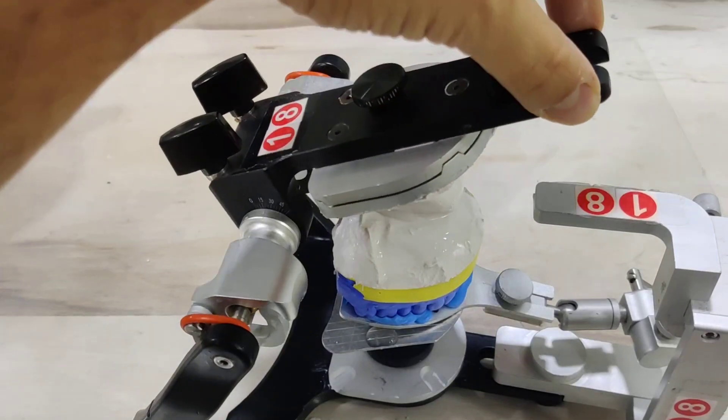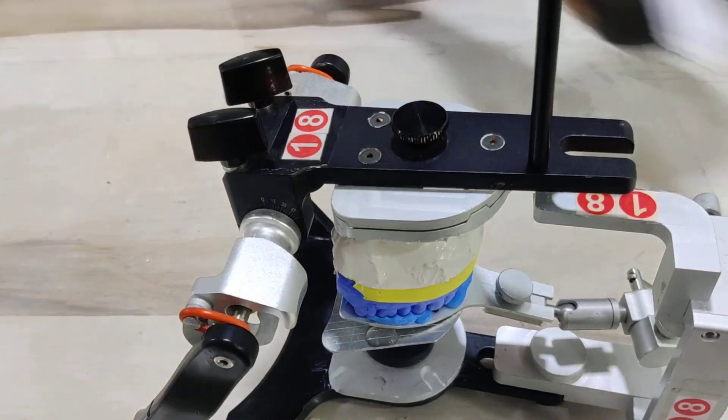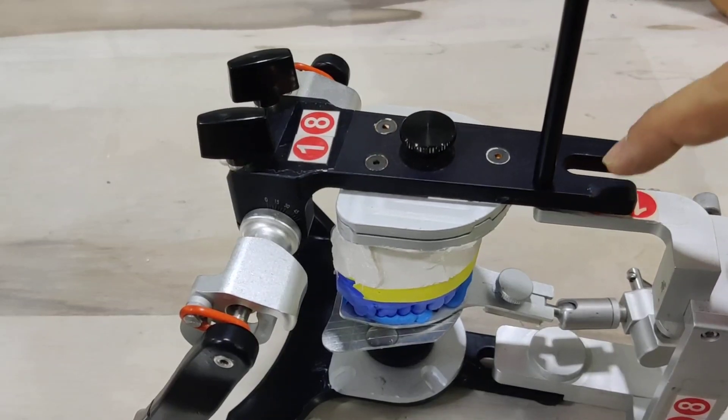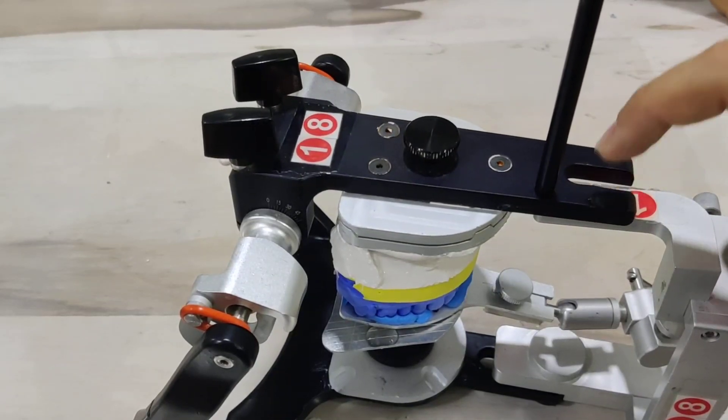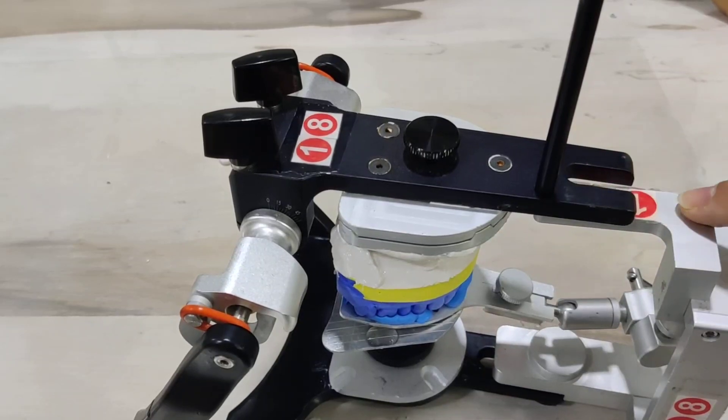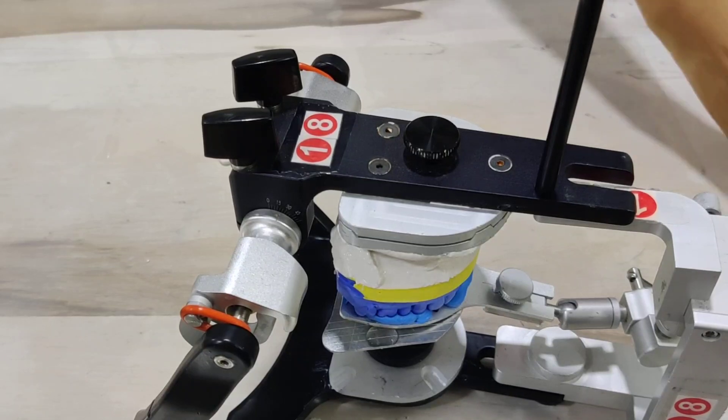As I tap, excess material keeps coming out and it is now that the upper member of the articulator is contacting the indirect mounting jig.